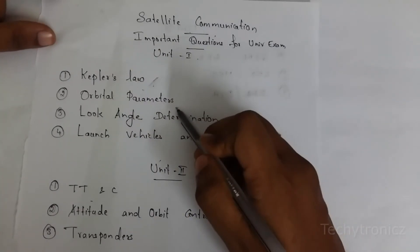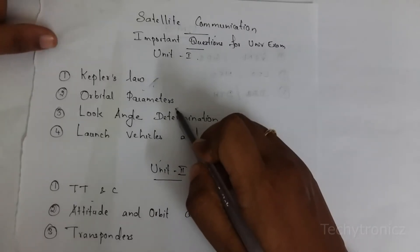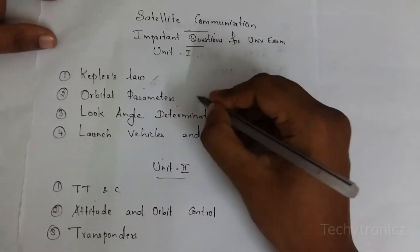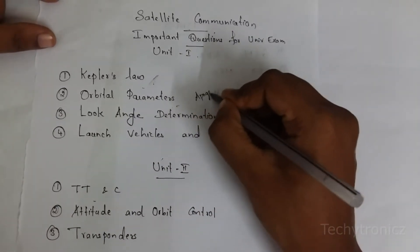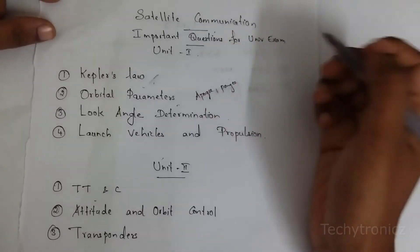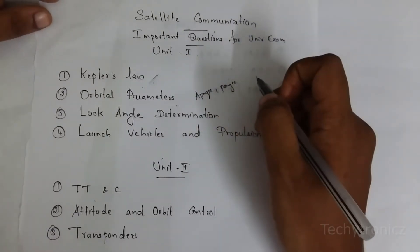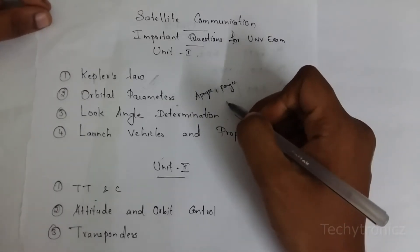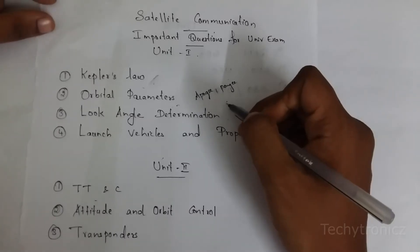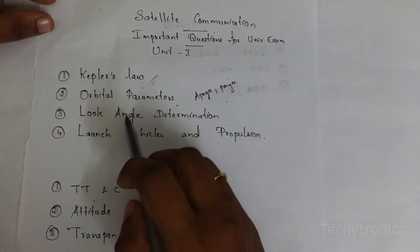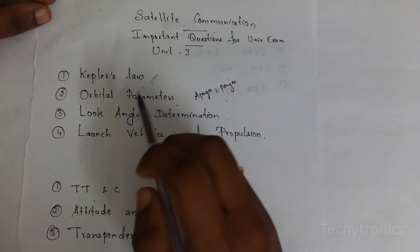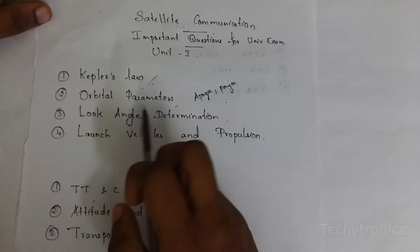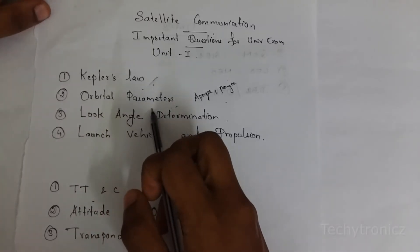The next one is orbital parameters. We are having different parameters of orbit — for example, apogee, perigee, ascending node, descending node, line of nodes, retrograde orbit, prograde orbit, mean anomaly, and true anomaly. These are some orbital parameters you have to learn. Sometimes some parameters will be asked in 2-mark questions, and the whole orbital parameters topic will be asked in a part B question.